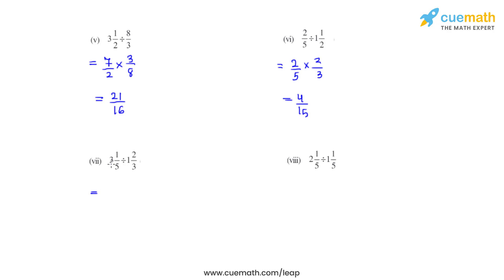Coming to the seventh bit, we have 3 1/5. That converted into an improper fraction will give us 16/5. Division is replaced with multiplication sign. Then we have 1 2/3, improper fraction of 1 2/3 will be 5/3. Reciprocal of 5/3 will be 3/5. So the product of these two fractions comes as 48/25.